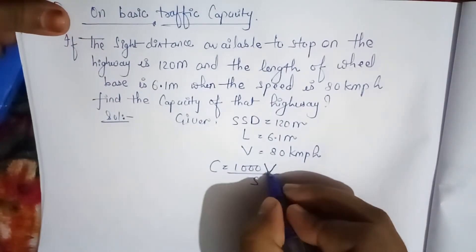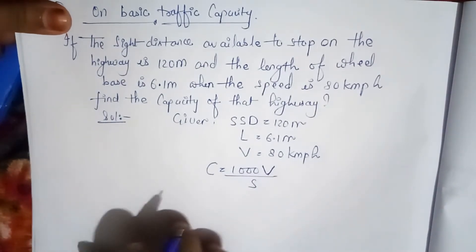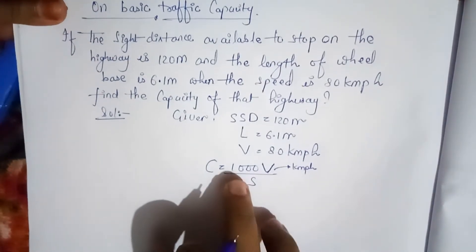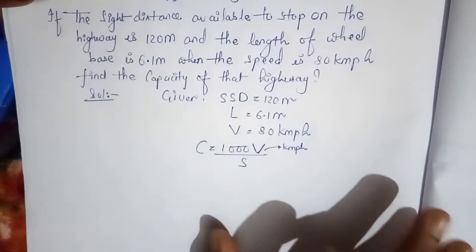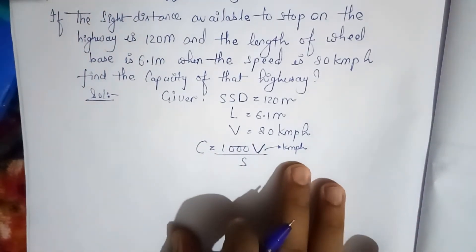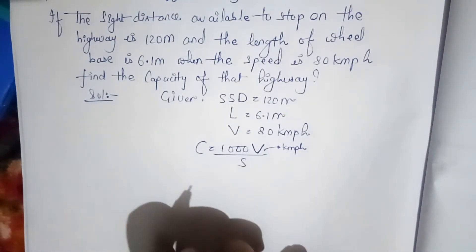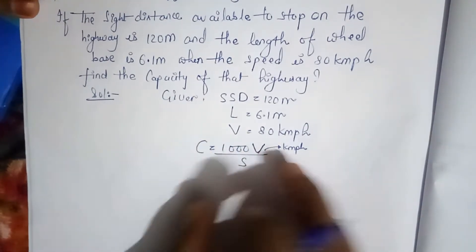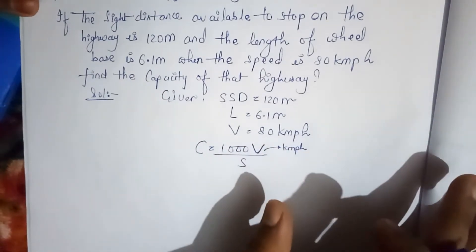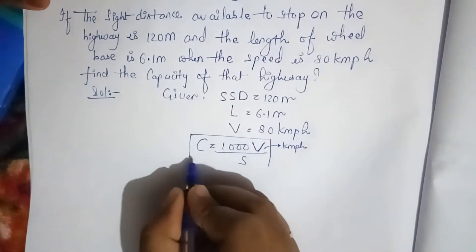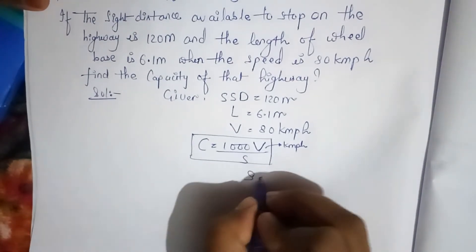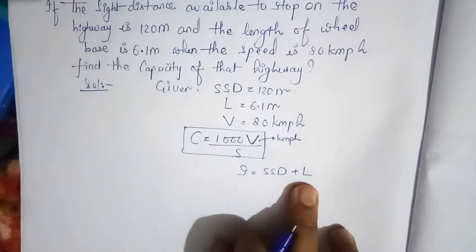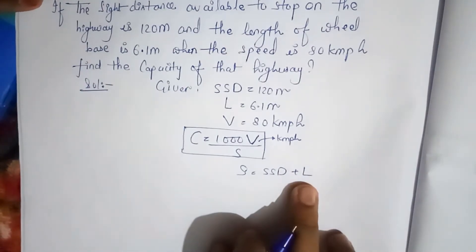Whenever I give you a formula and speed is involved, I will directly mention whether speed is in kmph or meter per second, because otherwise it is easy to make an error. Now, S = stopping sight distance + length of wheelbase. This was explained in the previous lecture — if you haven't watched that video, please watch it first.